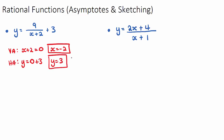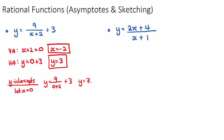Now let's find the intercepts. For the Y-intercept, we let X equal 0, giving Y equals 9 over (0 plus 2) plus 3. That's 9 over 2, which is 4.5, and adding 3 gives us 7.5. So the Y-intercept is at Y equals 7.5.